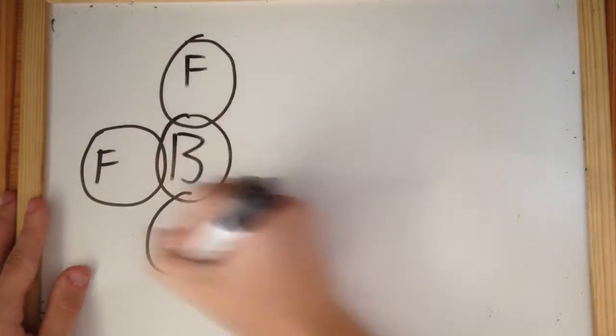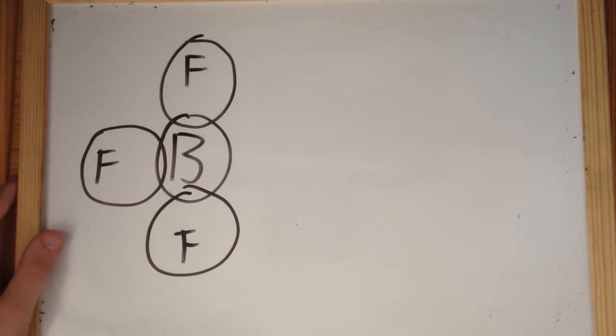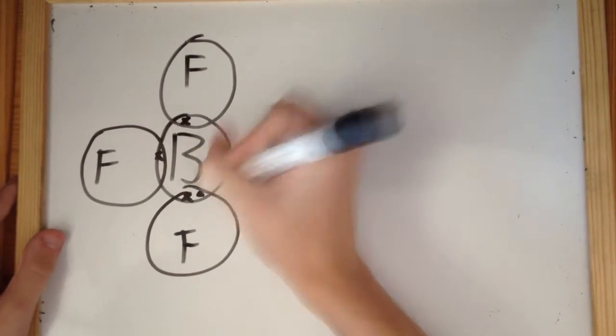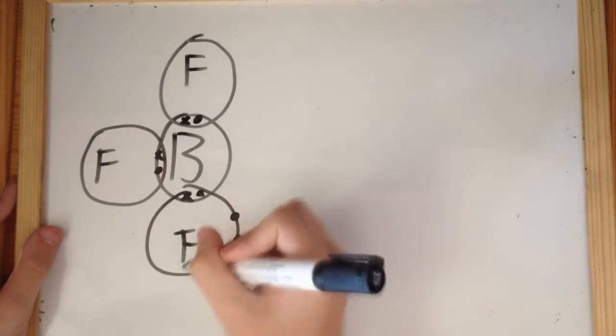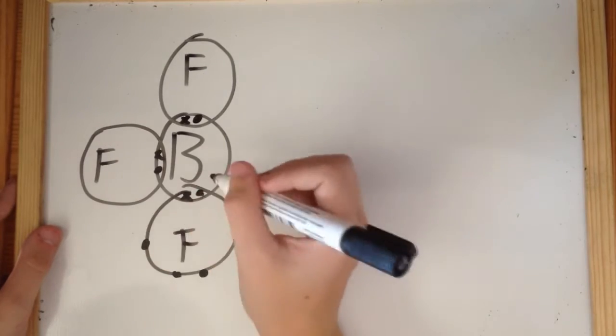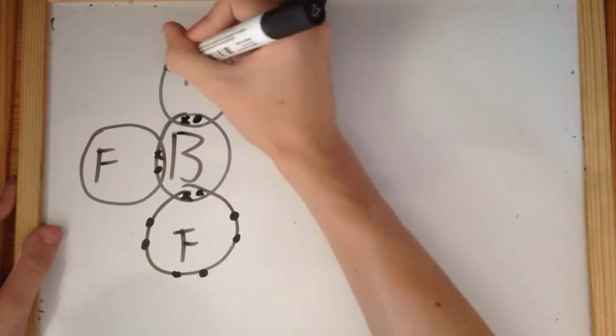However, there are times when covalent bonds won't satisfy every atom, for example in boron trifluoride. Here each fluorine atom maintains the electronic configuration of the noble gas, however boron needs two more electrons to complete its outer shell.